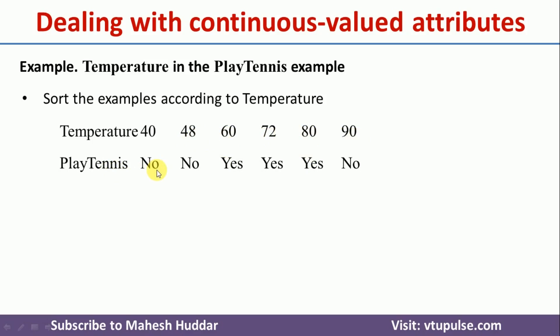Platonics has two target labels: yes and no. If you look at the values of temperature, the temperature has continuous values — it does not have any discrete possibilities like hot and cool. In that case we would have only two possibilities: hot and cool. But in this case, we have continuous values.